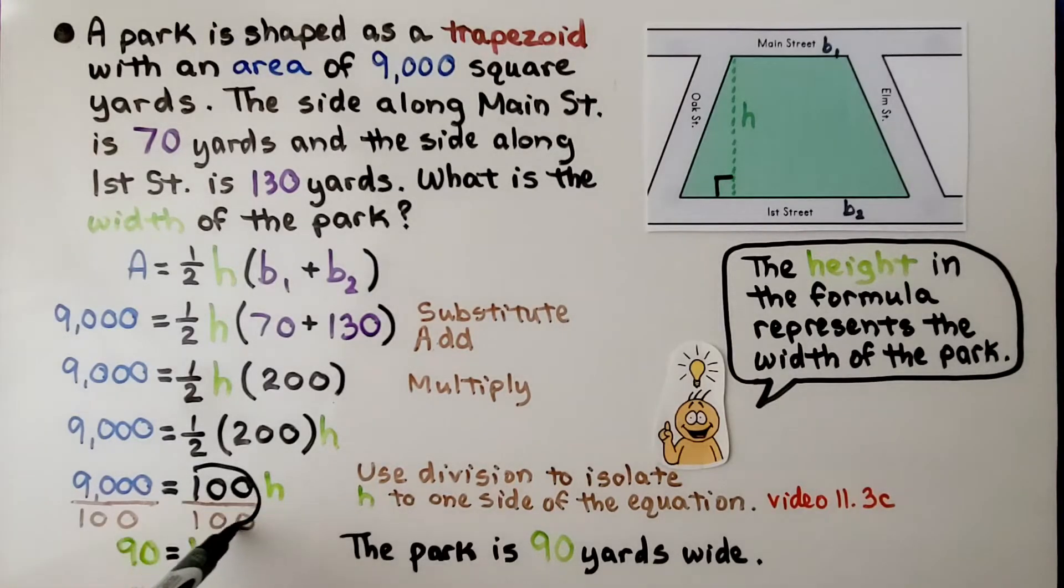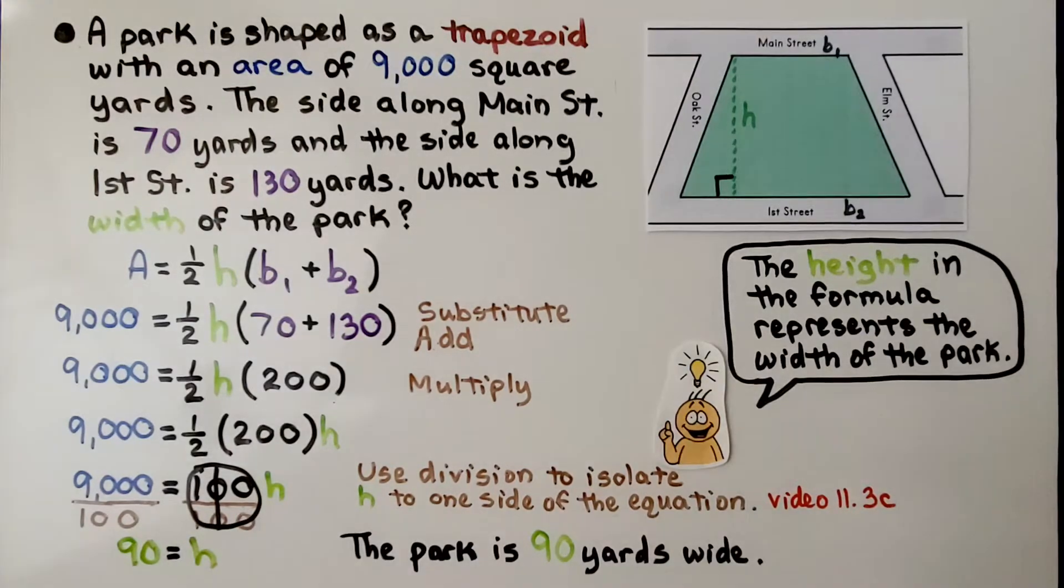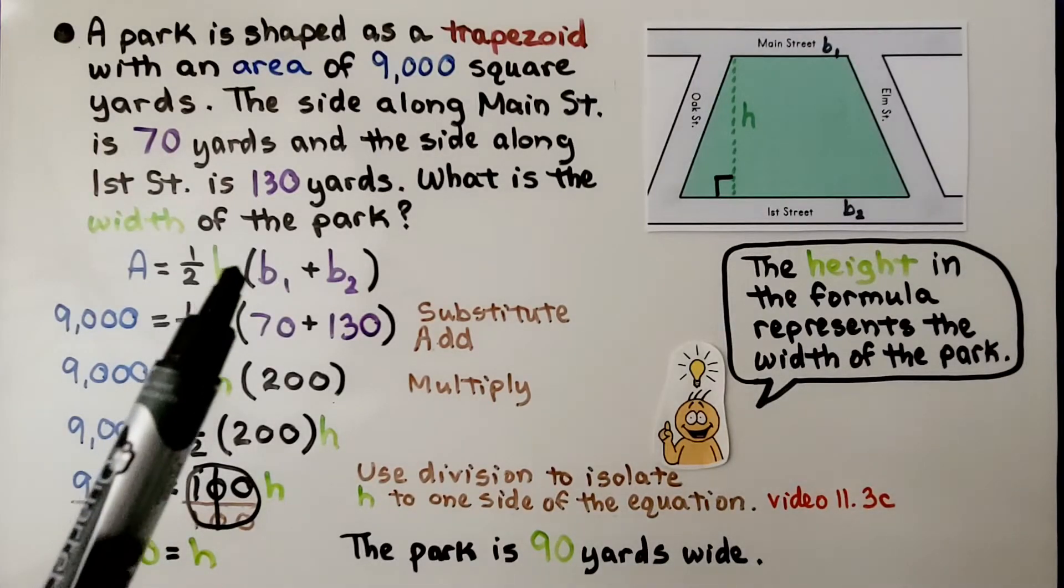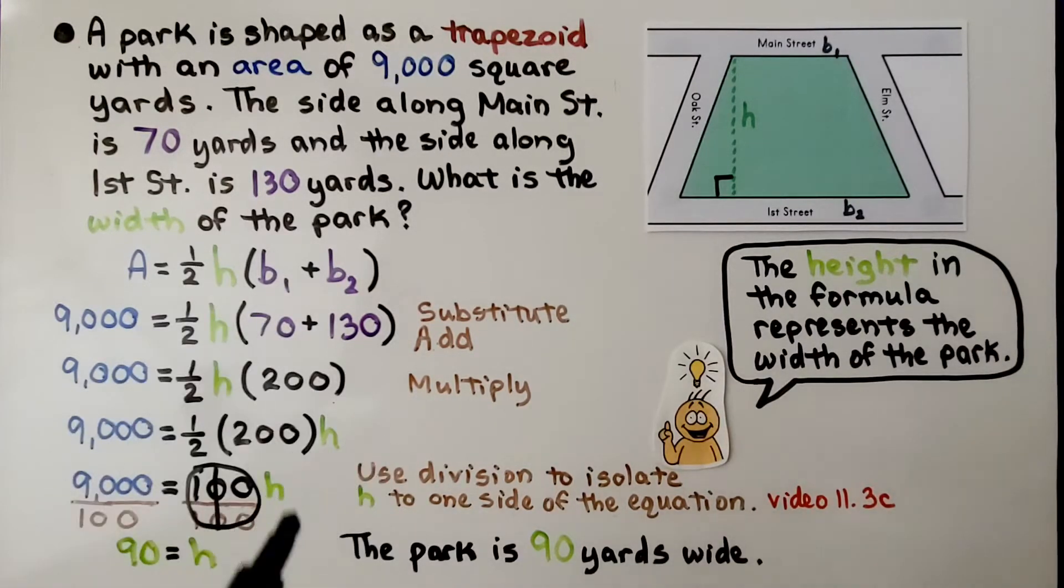We have one h, but we don't write that one coefficient. On this side, 9,000 divided by 100 is 90. The park is 90 yards wide. We solved this by slowly getting the h for our width to one side of the equal sign.